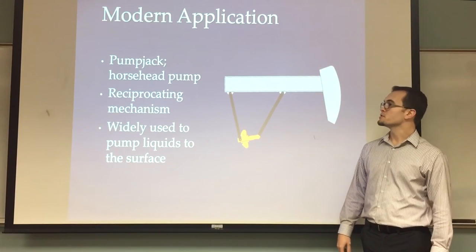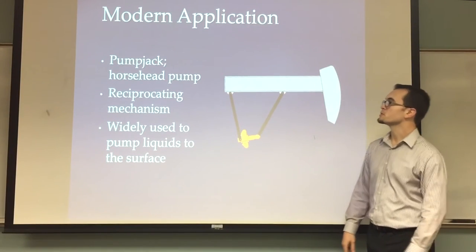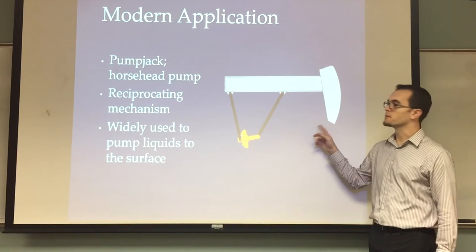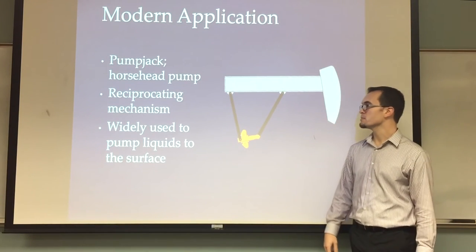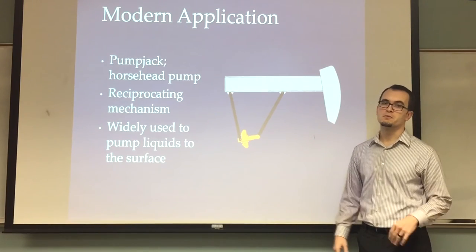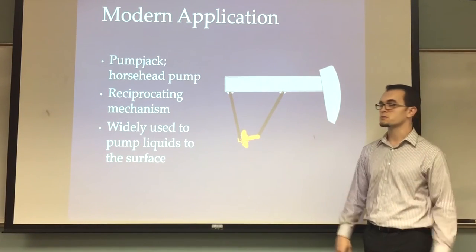I'll be discussing the model application. Here we chose the pump jack, or what's better known as the horse head pump because of this feature here at the end. This is a reciprocating mechanism and it's widely used to pump liquids to the surface when the pressure gradient isn't sufficient enough to drive the liquid to the surface.